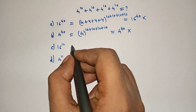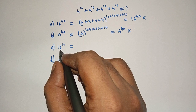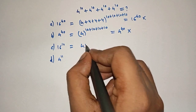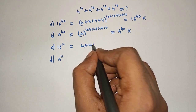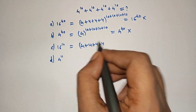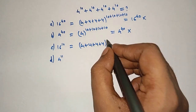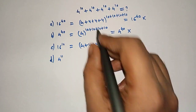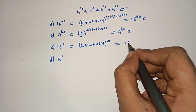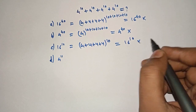Let's check 16 raised to 10. Here, 16 can be written as the sum of their bases: 4 plus 4 plus 4 plus 4, raised to the power 10. This again gives 16 raised to 10. This is not the right answer either.